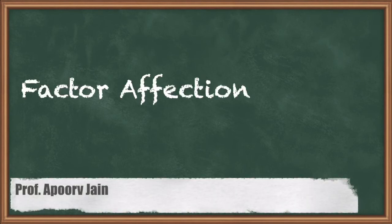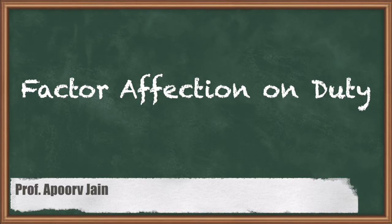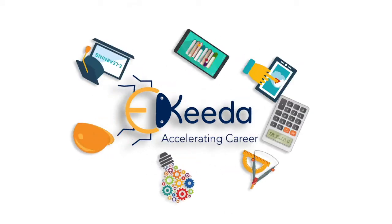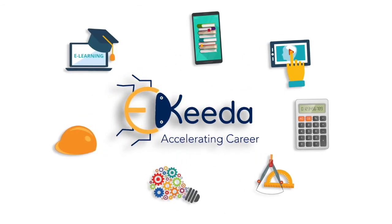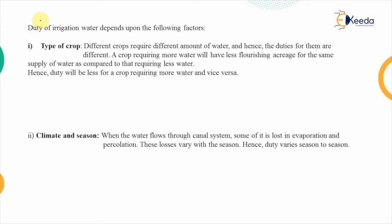Hello everyone. In this video we are going to discuss the different factors which affect the duty. So let's start. If we look at the duty of the irrigation water, it signifies the area which can be irrigated under the supply of 1 cumec of water. That is defined as duty. Now the first factor which affects the duty of irrigation water is known as the type of crop.